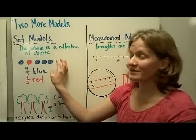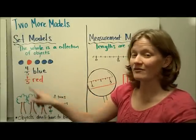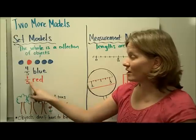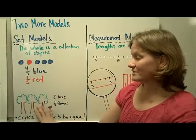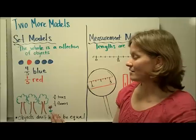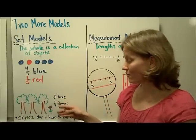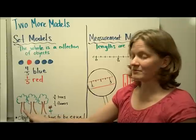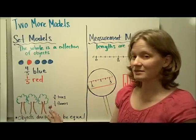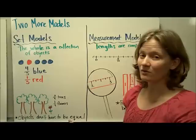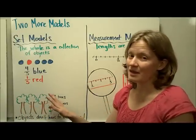In this example, the whole is five circles. Four fifths or four out of five of the circles are blue, and one fifth or one out of five of the circles are red. Another example are the trees and the flower down here. Three fourths of the objects are trees, three out of four, and one fourth of the objects is a flower. In this model, it's easy to see that objects don't have to be equal. The trees and the flowers are not equal, unlike the area model.